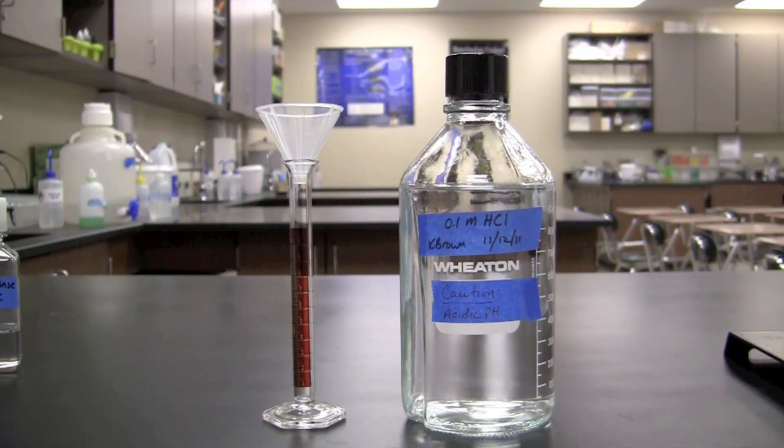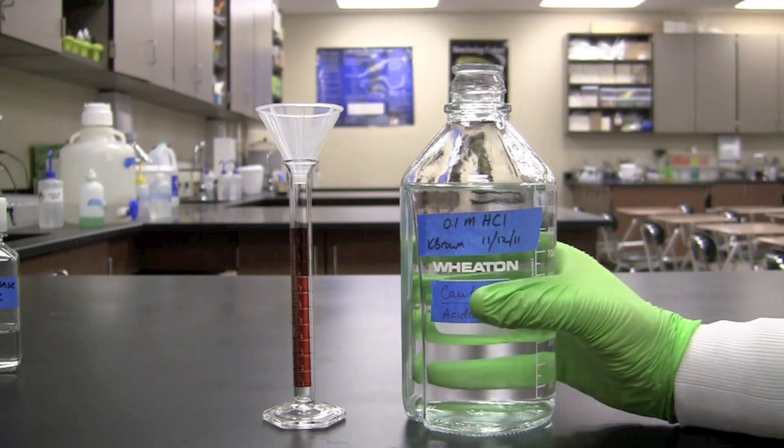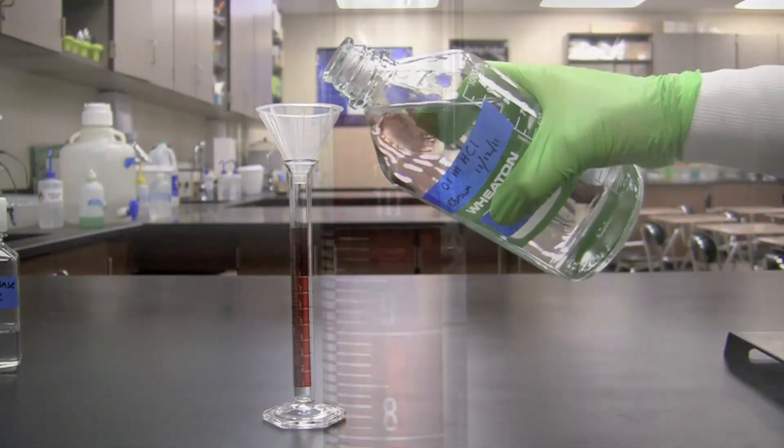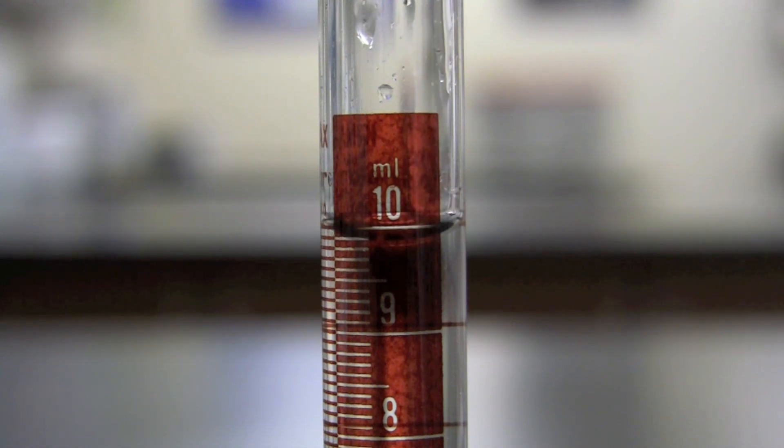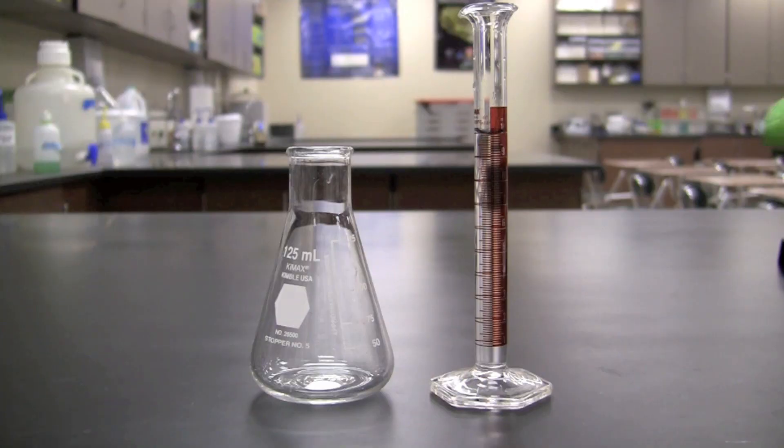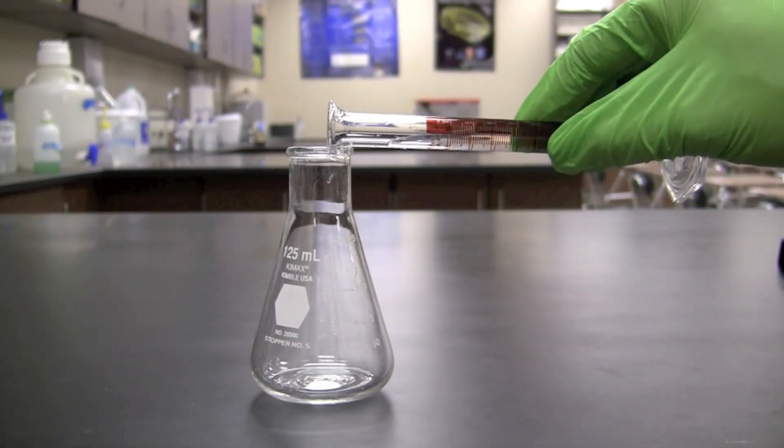Next, measure 10 milliliters of 0.1 molar hydrochloric acid using a graduated cylinder. Pour the 10 milliliters of hydrochloric acid into a flask.